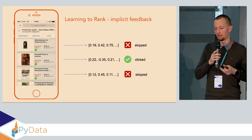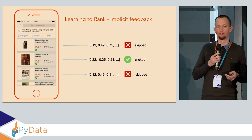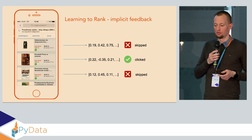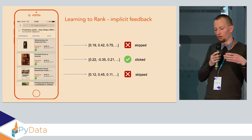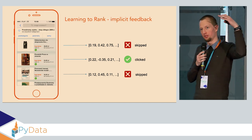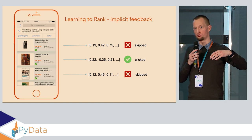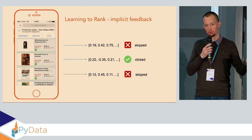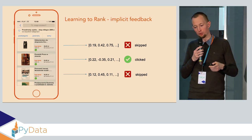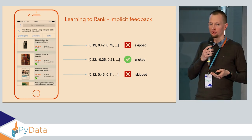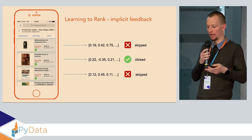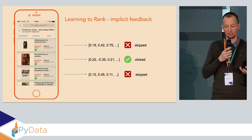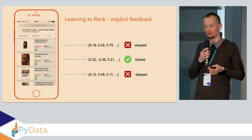Here is an example of how we collect implicit feedback data from search logs. We collect all the items that were displayed on some search results page along with the query and the user, and we convert the items to feature vectors and collect actions taken by users — whether the item was clicked, skipped, maybe purchased, or some other action.